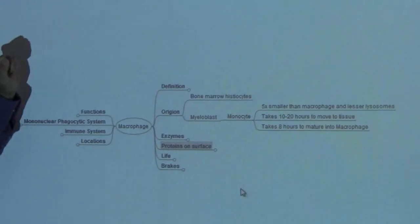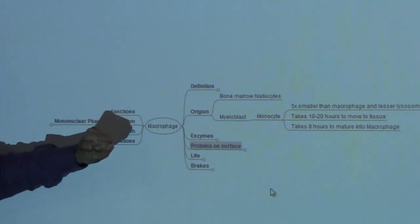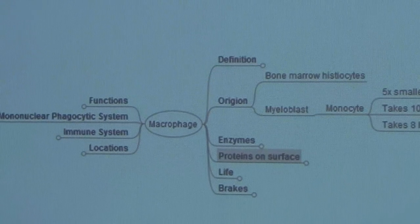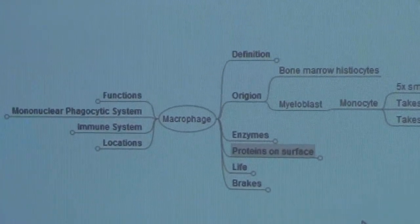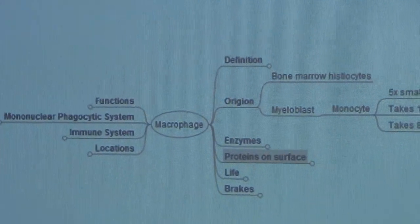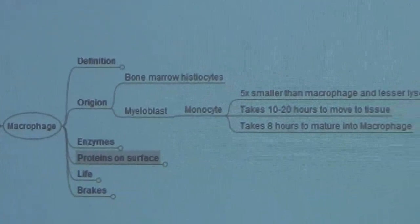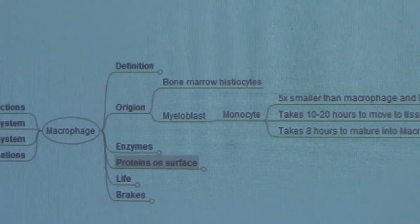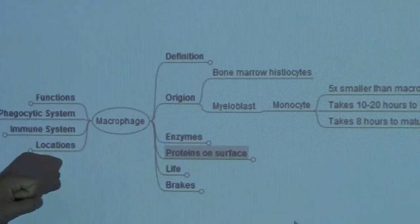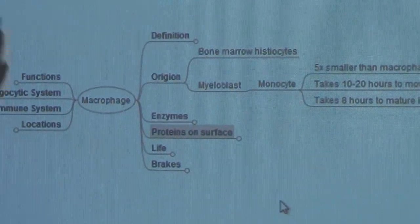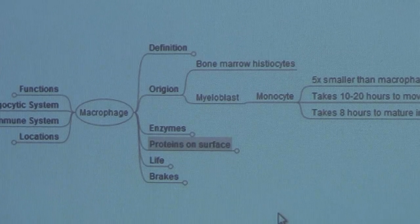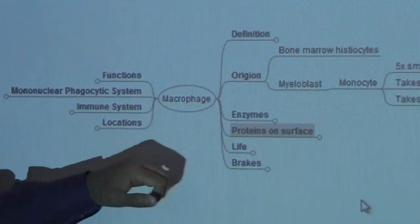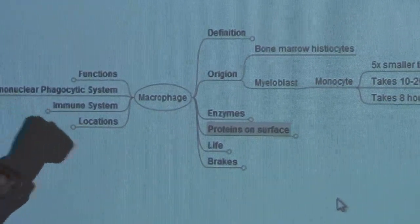We will talk about the definition of a macrophage, the origin, where the macrophage comes from, various enzymes present in the macrophage. Remember that all the cells in our body have various kinds of enzymes, some for the cell itself to function, and some like lysosomal enzymes which allow the cell to degrade proteins inside. In case of immune system cells, these can be used to break up bacteria, viruses, fungi, and yeast. Then we will talk about the proteins on the surface of the cell, the receptors, cluster of designations. Then the lifetime or lifespan of the macrophages, and then the breaks.